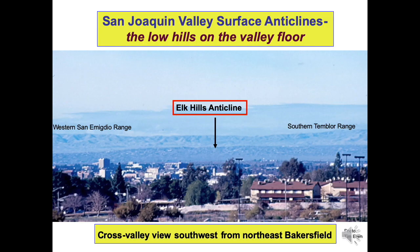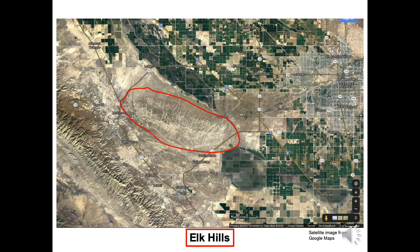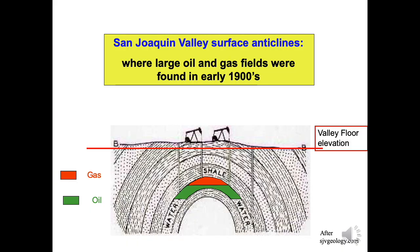Elk Hills, our next geologic feature, lies on the west side of the San Joaquin Valley. On a clear day, Elk Hills' outline can easily be seen from Bakersfield. The San Joaquin Valley is famous for surface anticlines — huge folds of the earth's crust that breach the valley floor. One of the largest is Elk Hills, outlined in red on this satellite image. These hills stand out because they are not affected by agricultural activity. Elk Hills is actually multiple hills, the highest of which reaches over a thousand feet above the valley floor. Surface anticlines in the San Joaquin Valley are where oil and gas are naturally trapped underground. Elk Hills remains one of the top oil and gas fields in the United States. In 2015, it ranked 22nd in United States proven reserves of oil remaining in the ground, according to the U.S. Energy Information Administration. It has produced more than 1.4 billion barrels of oil and 2 trillion cubic feet of natural gas.